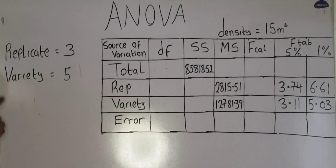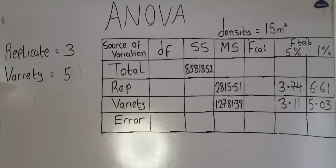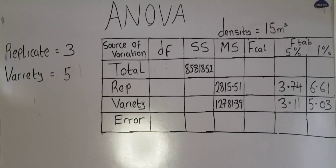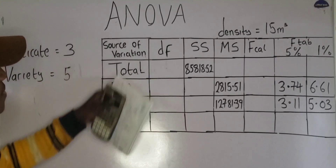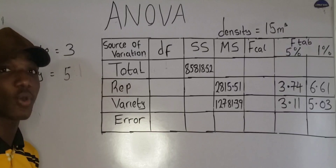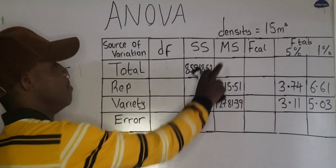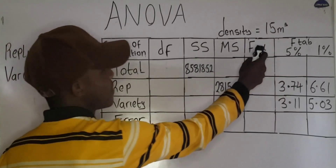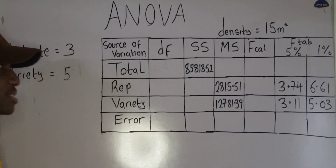We have been given that the number of replicates is 3 and the variety is 5. Don't forget that variety is also known as treatment — you might come across questions that use 'treatment' instead of 'variety.' So we have the source of variation, DF (degree of freedom), SS (sum of square), MS (mean square), and F calculated and F tabulated at 5% and 1% respectively.